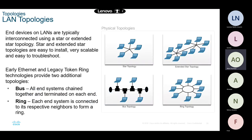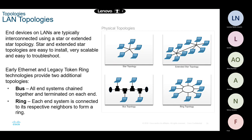Within the LAN — local area network — we have the star topology and the extended star topology formed by connecting two star topologies. We also have the bus and ring topologies, which are legacy technologies. The word legacy in networking means an older protocol or technology, meaning they are no longer really being used nowadays.